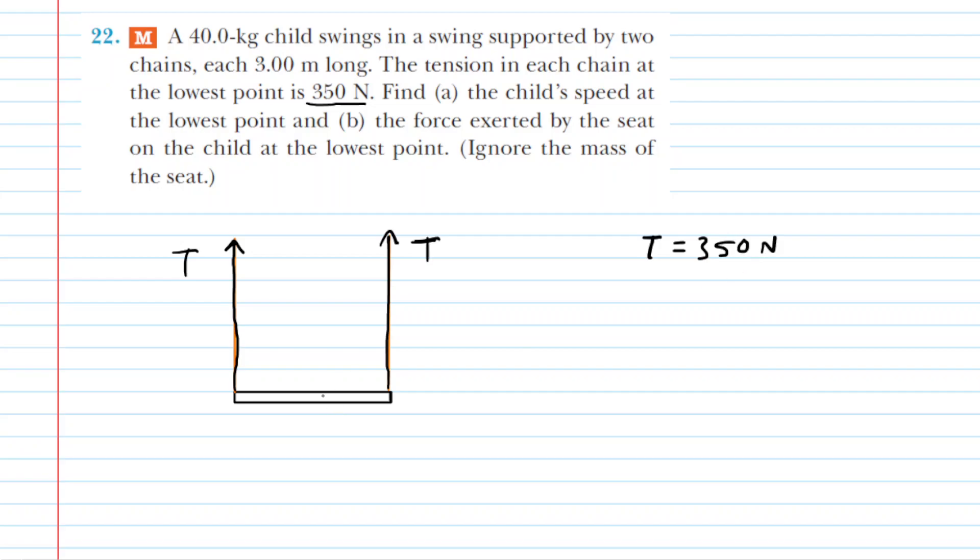Now, in addition, there is a child sitting on the swing, so the child's weight is going to be pressing down on the swing. We're going to call that Mg to represent the weight of the child pressing down.